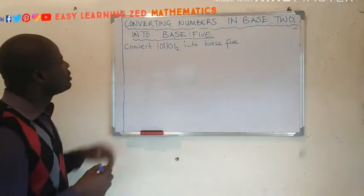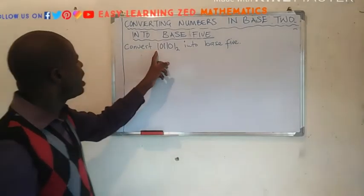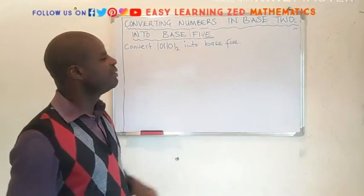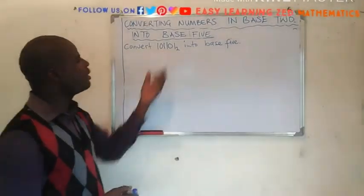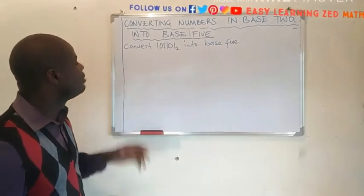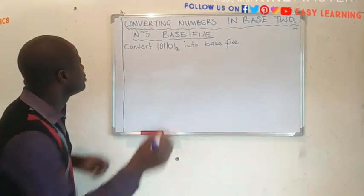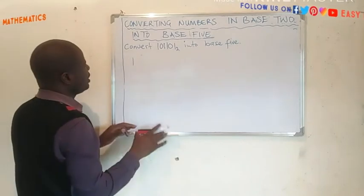Here we have a question which is convert 101101 base 2 into base 5. What I'm going to do, first we're going to convert this number which is in base 2 into base 10. So let's write the figures in this number.